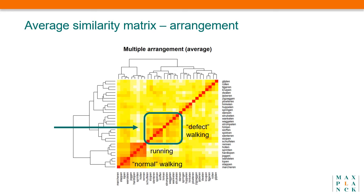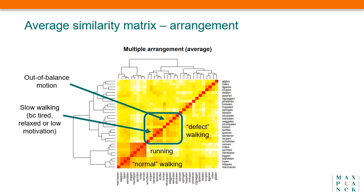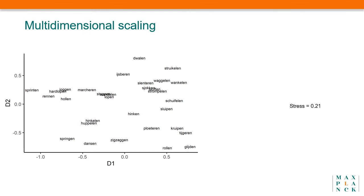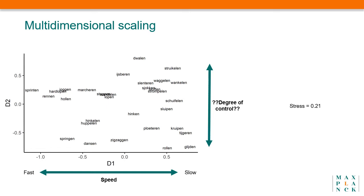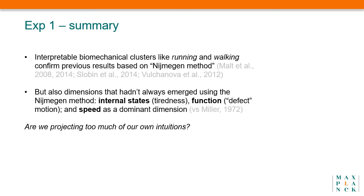This average matrix yields some clearly interpretable clusters and others that are more tenuous. We see a cluster of verbs denoting normal walking, one that corresponds to running motions, and a broader cluster that seems to correspond to defect walking — within which we find two more specific clusters: slow walking because of tiredness or low motivation, or because you are relaxed, and motion that is out of balance. There is a small cluster of jumpy motions, and one that corresponds to motion performed with the body close to the ground. Some verbs seem not to cluster at all. Interestingly, a multidimensional scaling solution yields a first dimension that readily maps onto the speed of motion, while the second dimension is not easily interpretable but seems to bear some relation to degree of control. In sum, we replicated previous findings of clear biomechanical clusters corresponding to running and walking, but also found evidence for dimensions such as internal states of the agent, the function of motion, and speed.